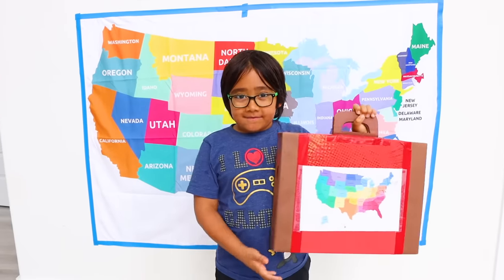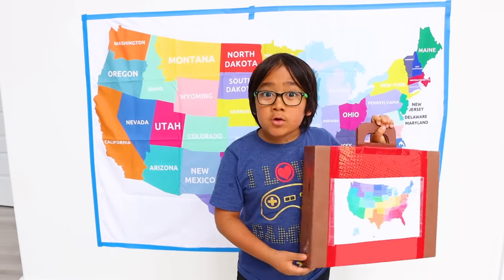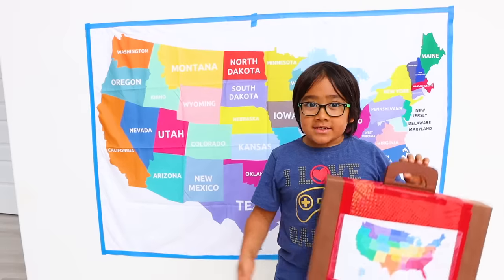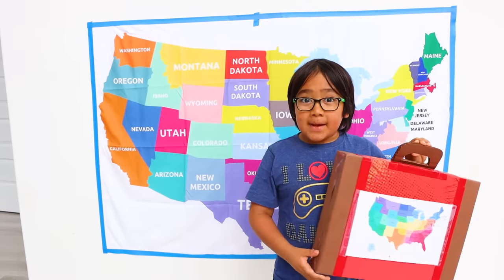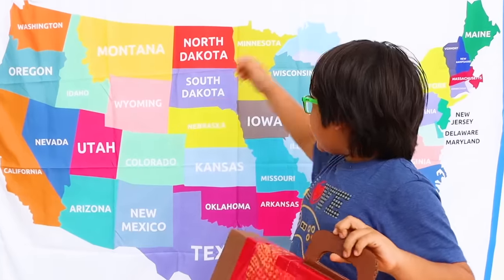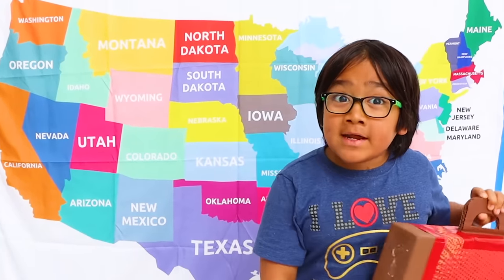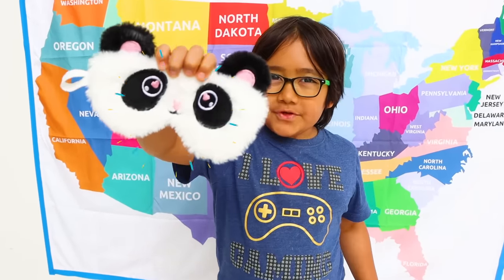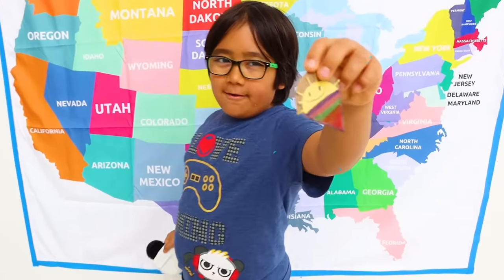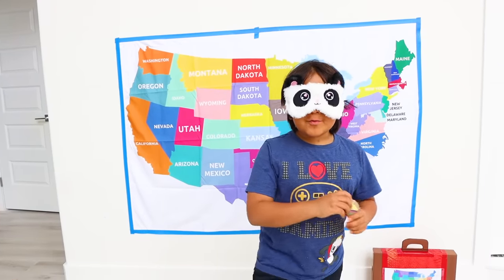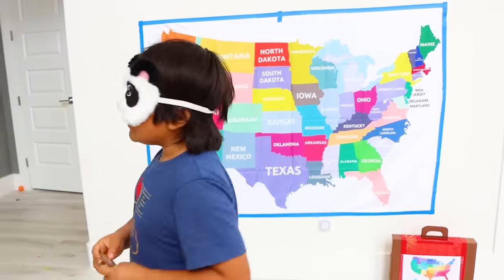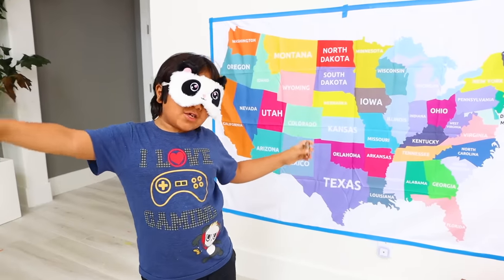Hey guys! Today I'm taking a virtual road trip around the whole USA, coloring and painting a snake each time and learning about it. To make it interesting, I'm going to pick a snake blindfolded with this sun cone. First I'm gonna spin around three times then pick a snake. Hopefully I'm in the right direction.